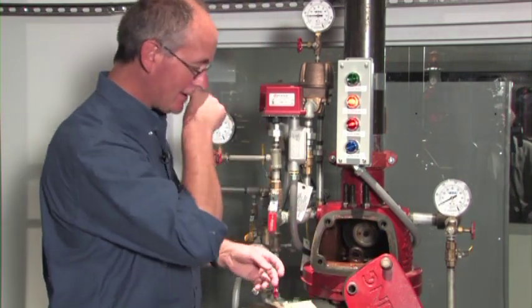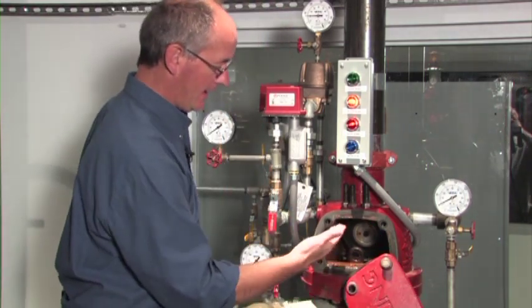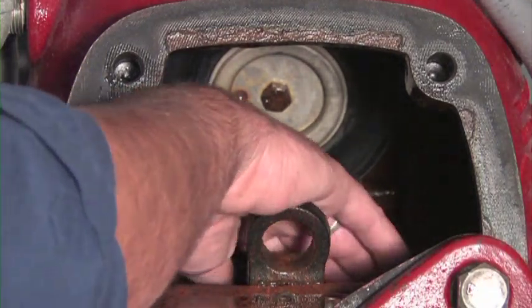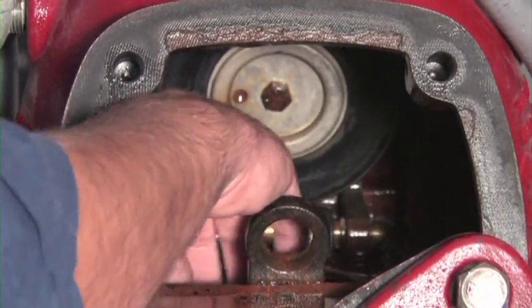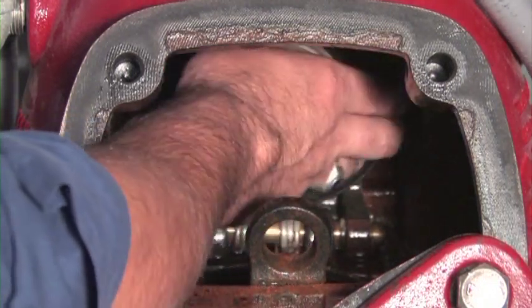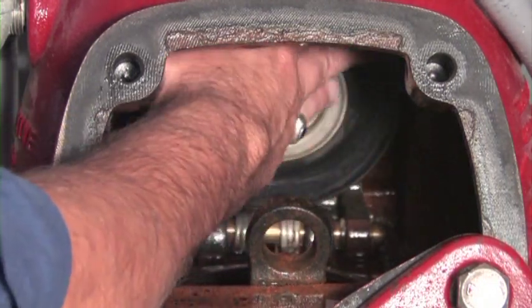Once the face plate is removed, take your hands and rub your fingers across the brass seats, the air and water seat. Remove any debris that may be residual through water flow. Now rub your fingers across the clapper rubber. Remove any debris that's residual through water flow.